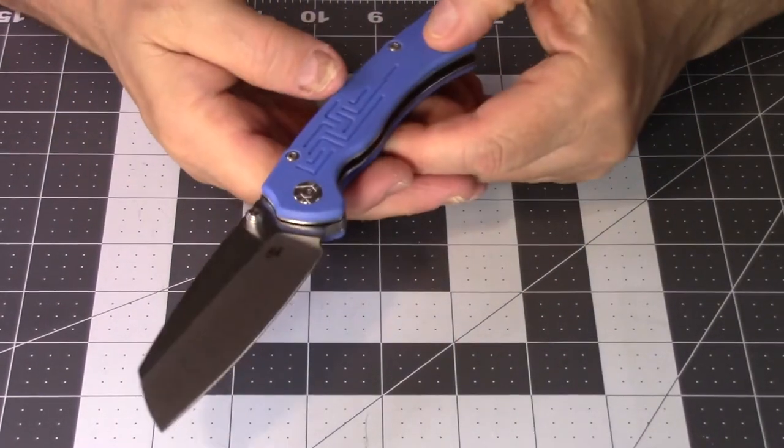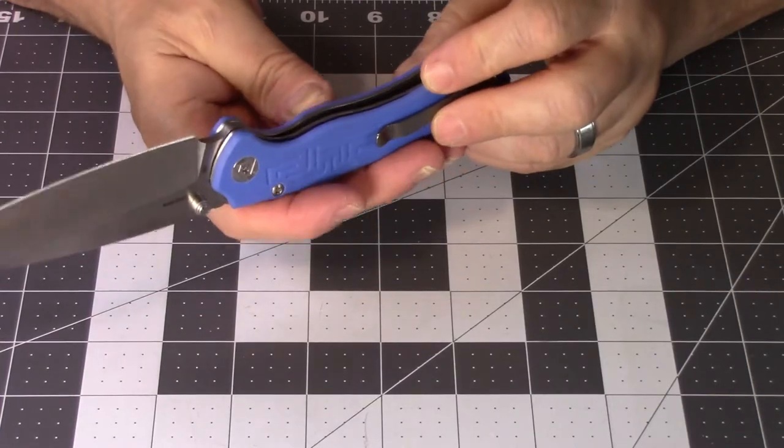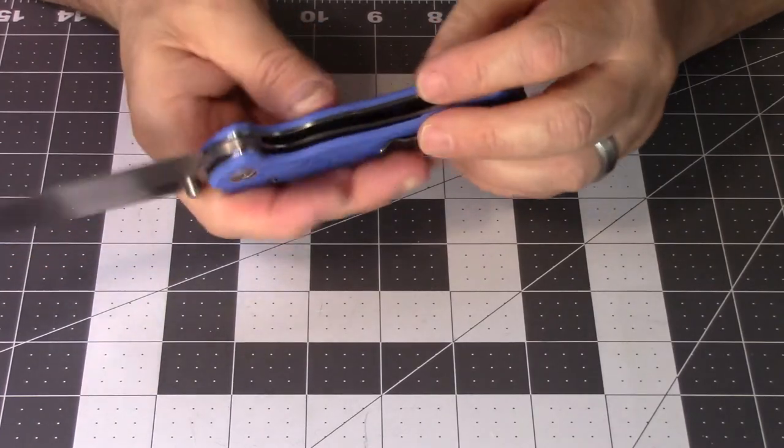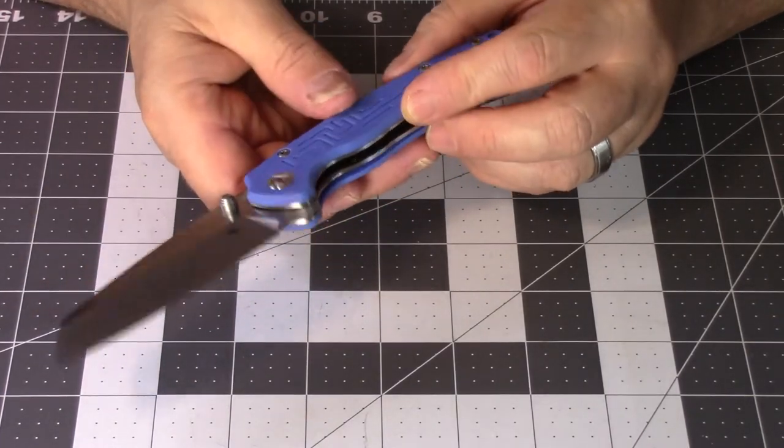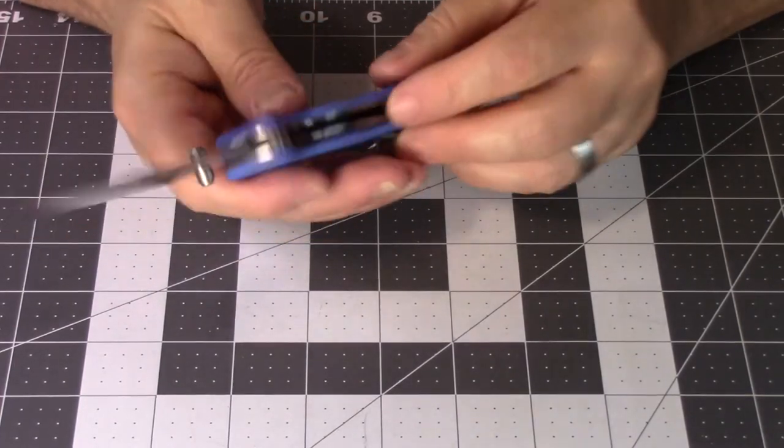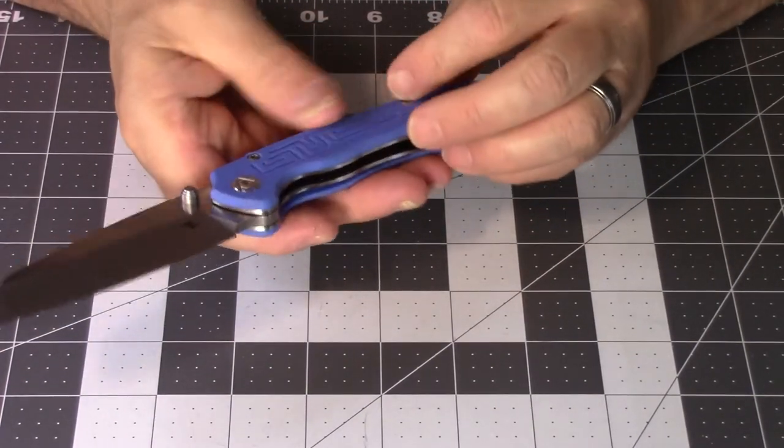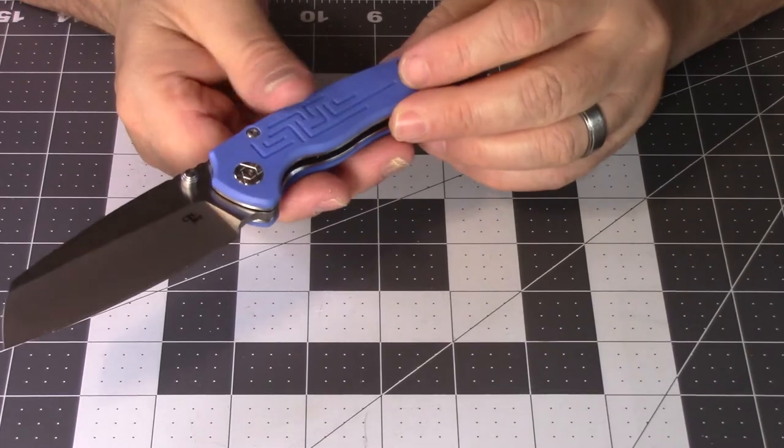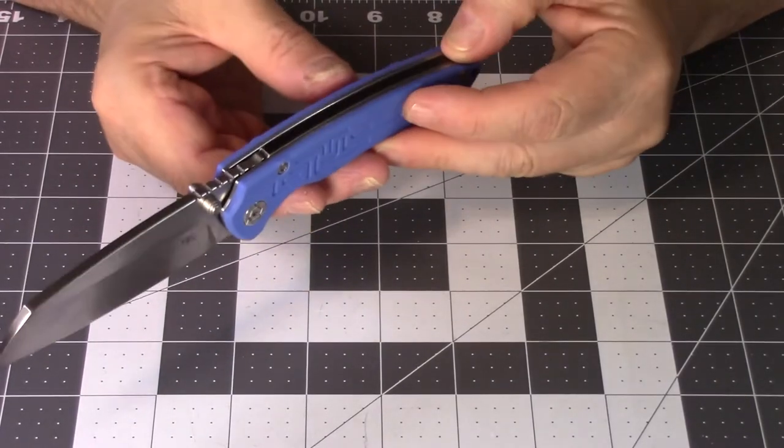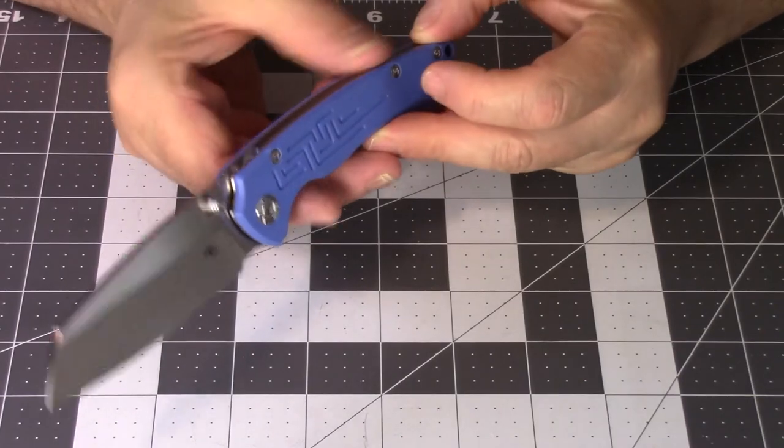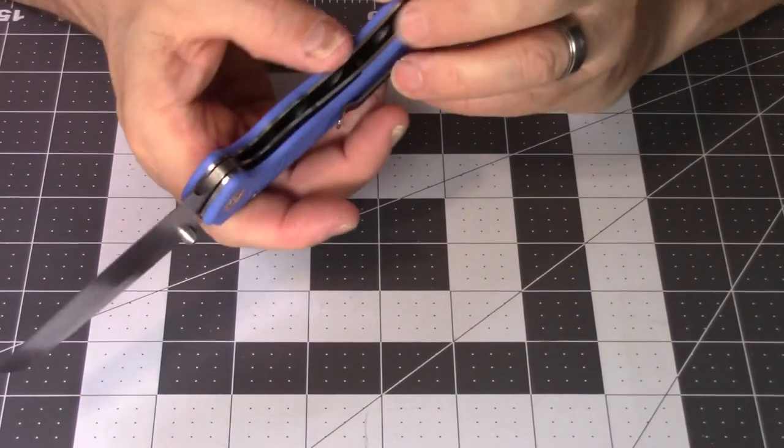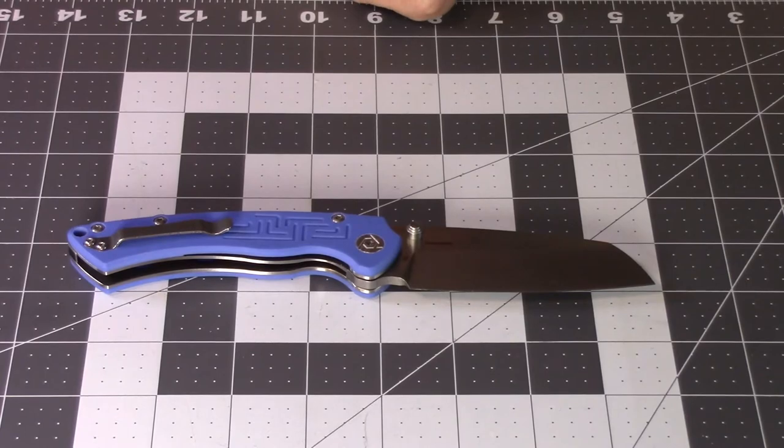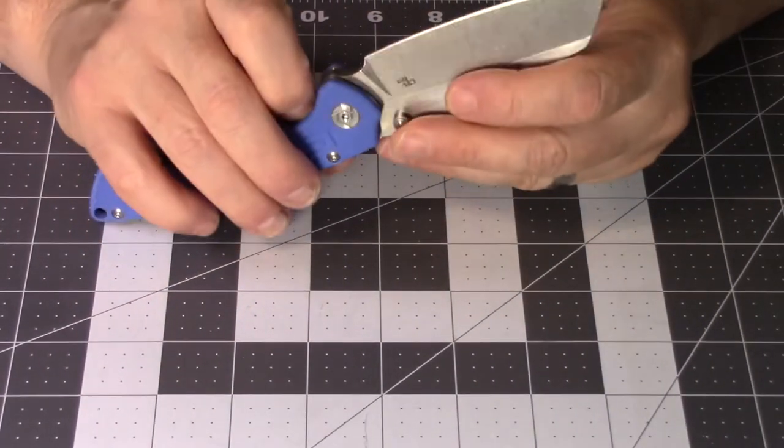The scales feel like maybe G10 but could be just an FRN material. It's kind of hard telling - that color sometimes, blue, makes it look a little less of that matte G10 look. The finishing and the work around it is nice. There's nowhere that there's no fit problems at all, no sharp edges anywhere. On the surface it looks like a well-made knife.